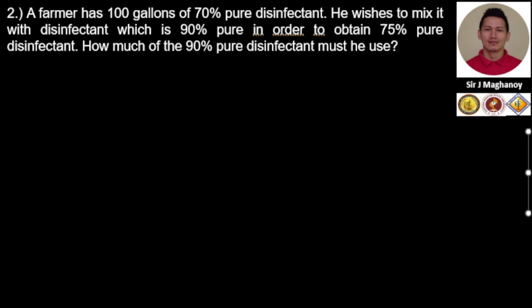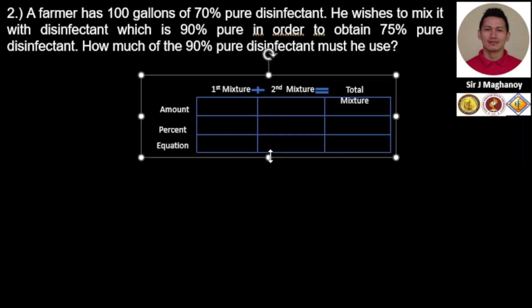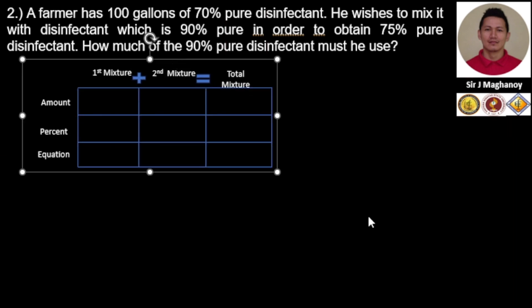So right away, get our mixture table to formulate our equation. Our first mixture is 100 gallons at 70% disinfectant. So the amount here is in gallons, percent is 70%.